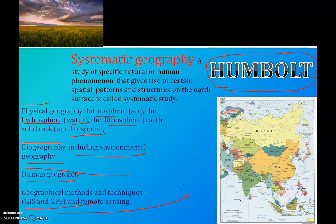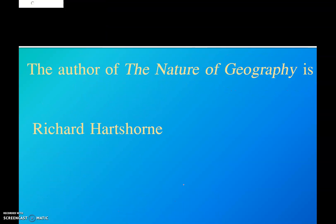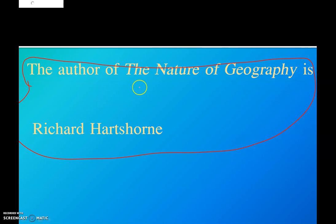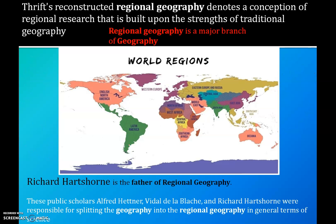That was systematic geography. Now let's see regional geography. The author of natural geography is Richard Hartshorne, also known as the father of regional geography. Regional geography is a major branch of geography.